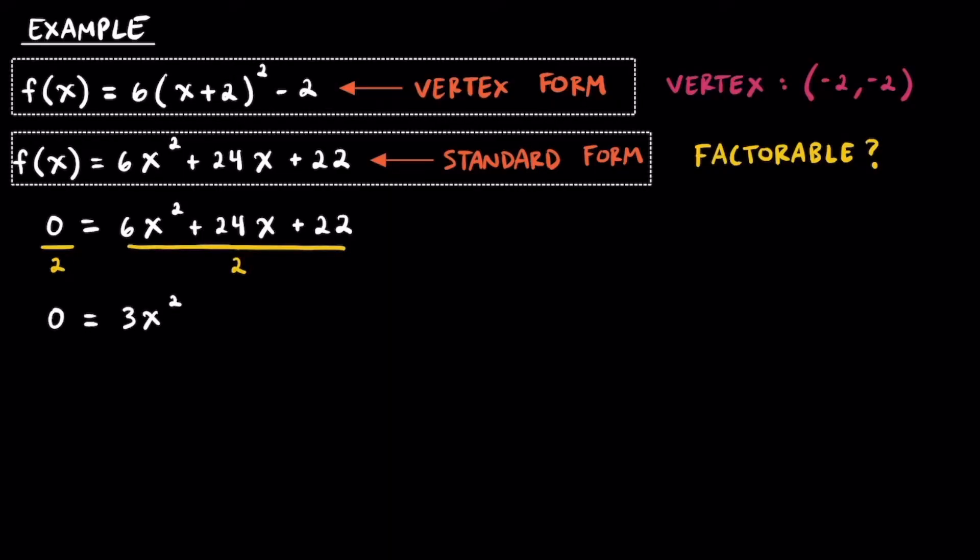Doing so, we'll get 0 = 3x² + 12x + 11. At this point, you can see if you can try to factor, but we can also just check the discriminant. Remember, the discriminant is part of the quadratic formula, and it's the square root of b² - 4ac, and if that b² - 4ac is equal to a perfect square, then we could factor this trinomial.